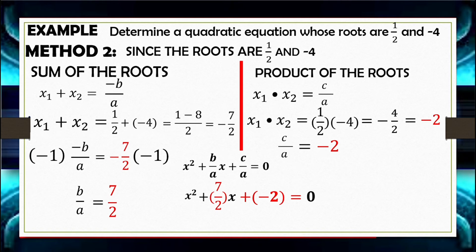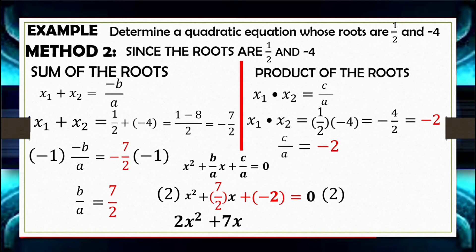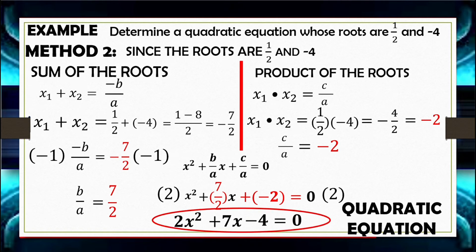Since the equation involves a fraction, we multiply both sides by 2 to clear the denominator. This gives 2X squared plus 7X minus 4 equals 0, which matches our result from the first method.